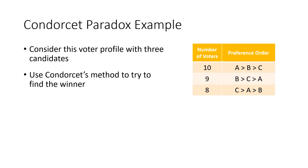We've got a voter profile. Let's remember how we read this. We have 10 voters who have A as their top choice, B as their second choice, and C as their third choice. Nine voters who like B the best, C second best, and A least. And eight voters who like C the best, then A, and then B.